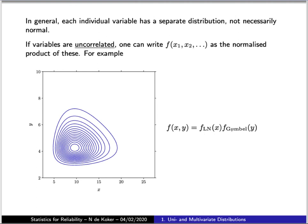Now in the case where they are uncorrelated, we can still write our multivariate probability distribution function simply as the product of the marginal distributions.